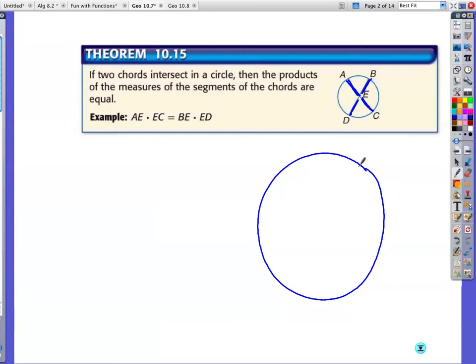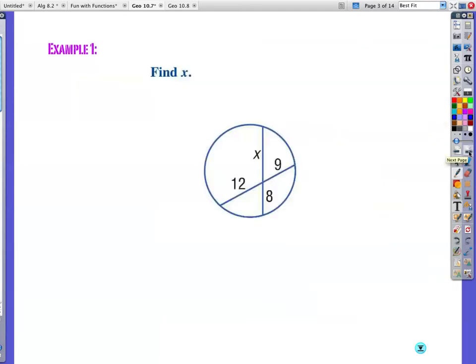I'm going to show you with this example right here. Example one, we want to find x. It's as simple as this. So 8 times this piece, which is x, is equal to 9 times this piece, which is 12. So 8x is equal to 108. Now I solve for x. I get x is equal to 13.5.